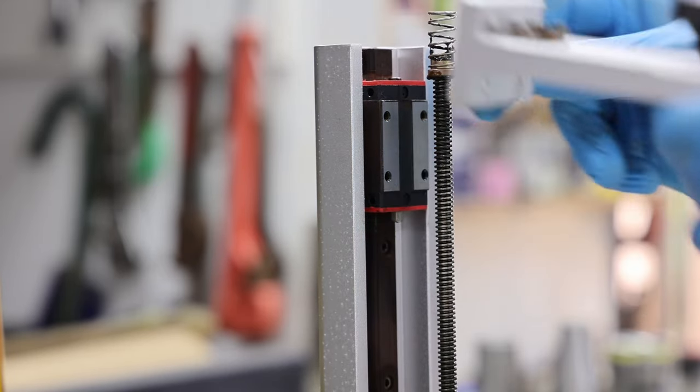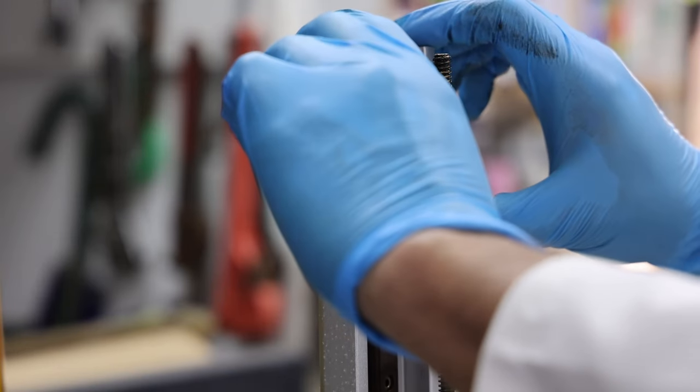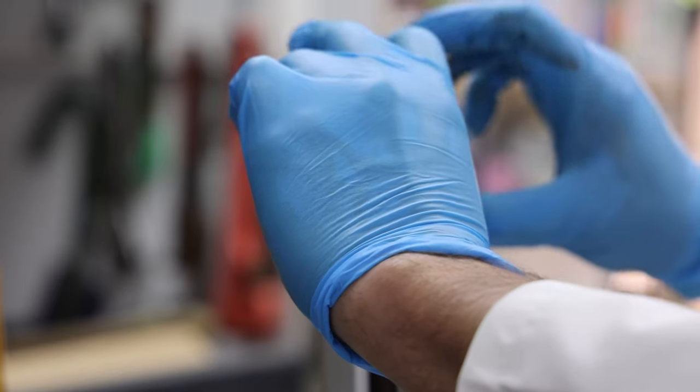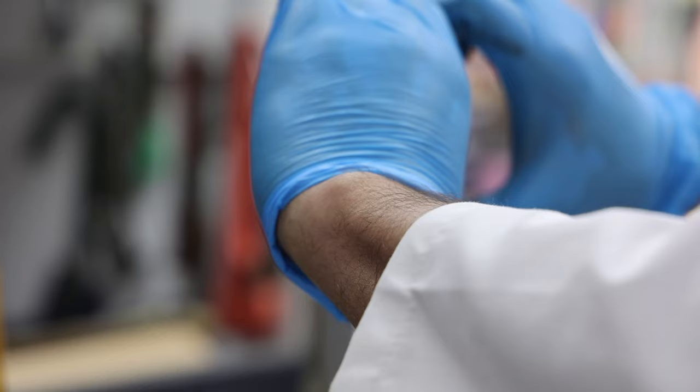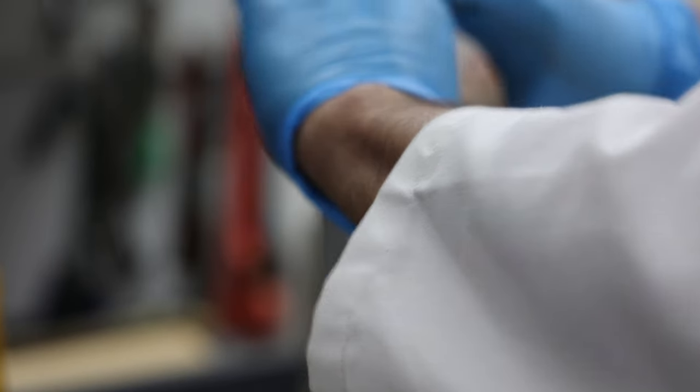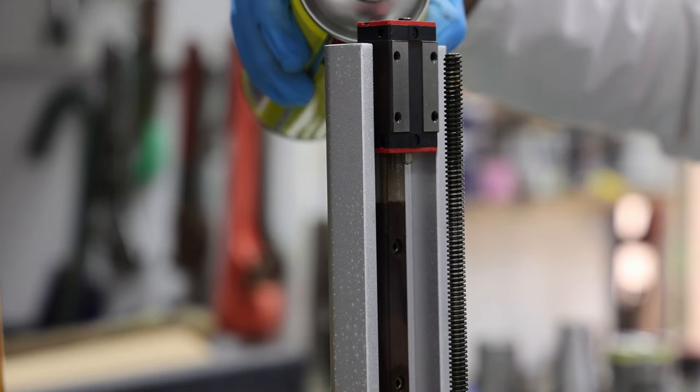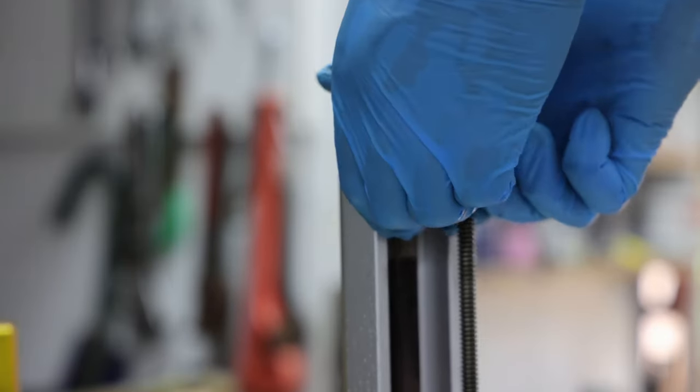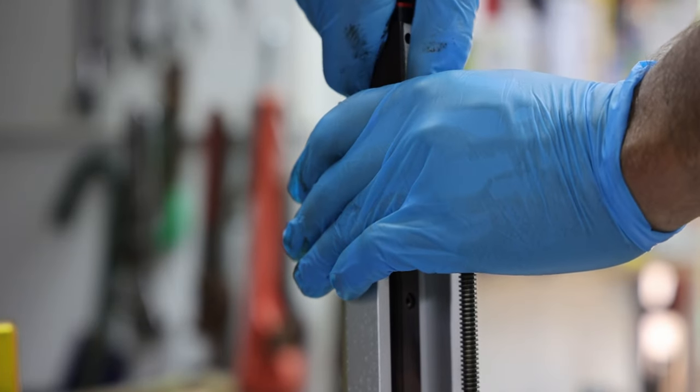That is the anti-backlash nut with the spring in between to keep some pressure on both sides of the thread. Here you can see I actually really struggled to move the carriage off the slide. It was pretty stiff and took me a while of wiggling and moving it back and forth before it eventually came off.